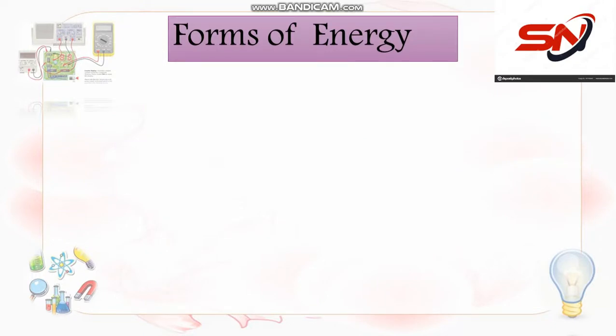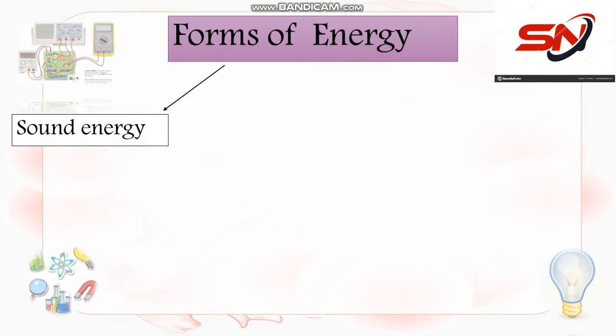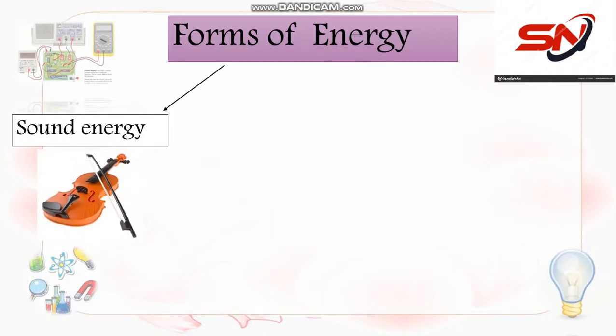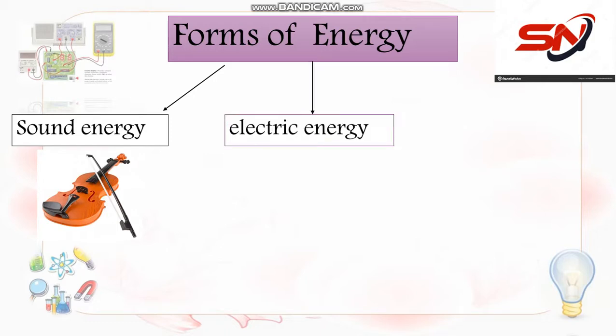Forms of energy — إيه أشكال الأنرجي أو أنواع الأنرجي عندنا؟ Sound energy: أي حاجة بتطلع صوت، سواء من آلة موسيقية أو مثلاً طبل، أي حاجة بتطلع صوت، حتى الصوت اللي أنتوا سمعينه ده اسمه sound energy.